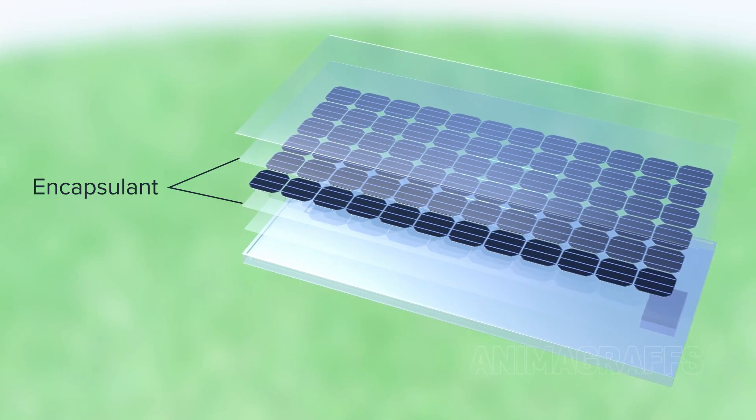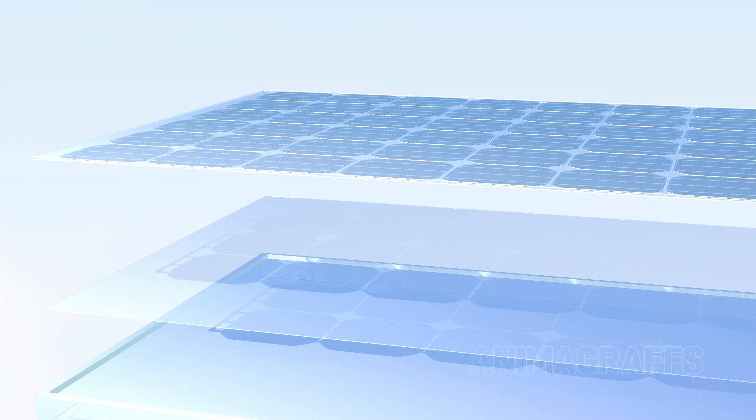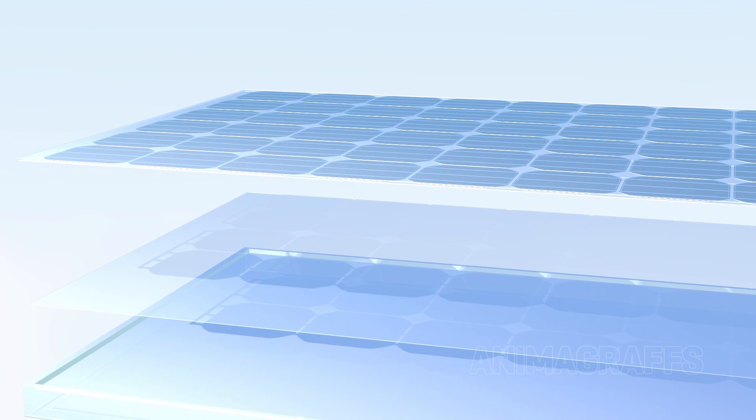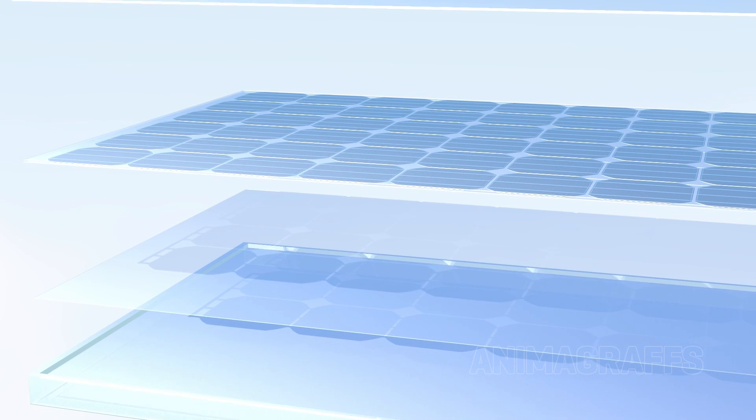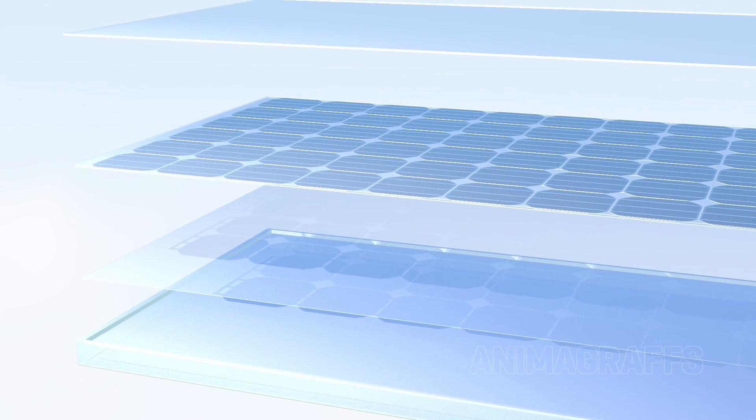Encapsulant. The encapsulant is an adhesive that seals around the solar cells, protecting them from harmful outside elements and keeping them firmly in place. A common encapsulant material called EVA, ethyl vinyl acetate, is stable under high temperatures and UV exposure and is also transparent.